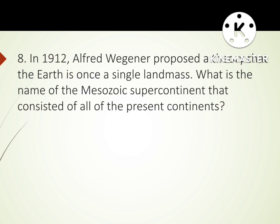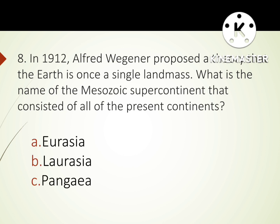Number 8 question: In 1912, Alfred Wegener proposed a theory that the earth was once a single landmass. What is the name of the Mesozoic supercontinent that consisted of all of the present continents? A. Eurasia. B. Laurasia. C. Pangaea. D. Gondwanaland. The correct answer is C: Pangaea.